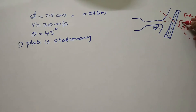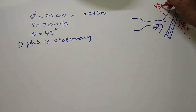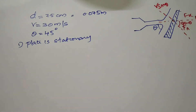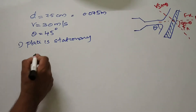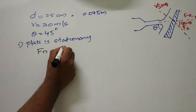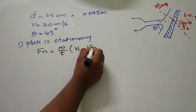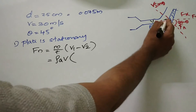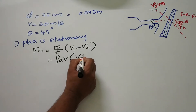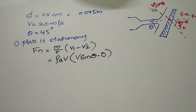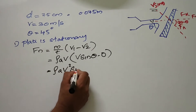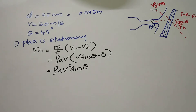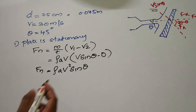The angle involved is 90 minus theta. The velocity component in the normal direction is V sin theta. So F of N equals mass flow rate times change in velocity in the normal direction, which gives us rho times A times V squared times sin theta.